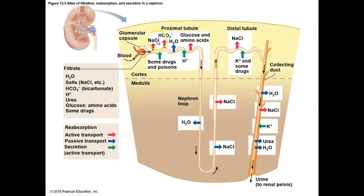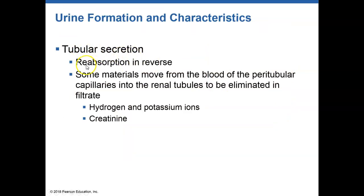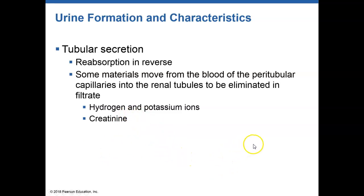We're going to be reabsorbing ions that we need, glucose, amino acids, as well as water — we're absorbing water continuously. As for secretion, we secrete materials that didn't get filtered out: some ions that didn't get filtered, proteins that are too big that we want to get rid of, some drugs, and some waste products like hormone waste products that we might no longer need.